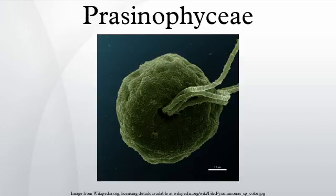The prasinophytes are a class of unicellular green algae in the division Chlorophyta. Prasinophytes mainly include marine planktonic species, as well as some freshwater representatives. The prasinophytes are morphologically diverse, including flagellates with 1 to 8 flagella and non-motile unicells.